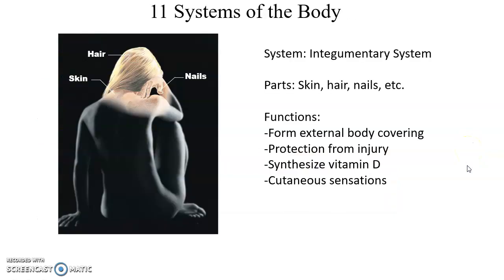There are 11 systems of the body. The first is the integumentary system, primarily the skin — the largest organ of the body — along with hair and nails. Functions include forming the external covering of the body, protecting us from injury, chemicals, UV light, and heat, and preventing pathogens from entering the body.